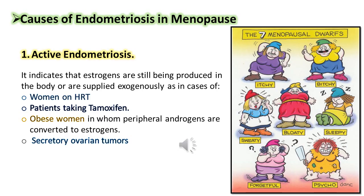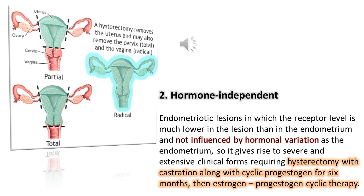A pelvic mass is another presentation. Causes of endometriosis in menopause include active endometriosis, indicating estrogens are still being produced or supplied exogenously — as in women on hormone replacement therapy, patients taking tamoxifen, obese women in whom peripheral androgens are converted to estrogens, or secretory ovarian tumors. Hormone-independent endometriotic lesions, in which receptor levels are much lower, are not influenced by hormonal variation and give rise to severe and extensive clinical forms requiring hysterectomy with castration, along with cyclic progesterone for 6 months, then estrogen-progesterone cyclic therapy.